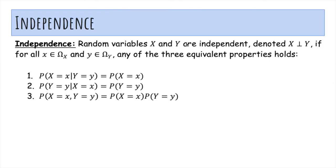We say that random variables X and Y are independent, denoted X perpendicular to Y, if for every x in the range of X and y in the range of Y, any of these three equivalent properties holds.